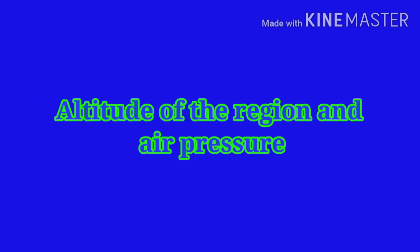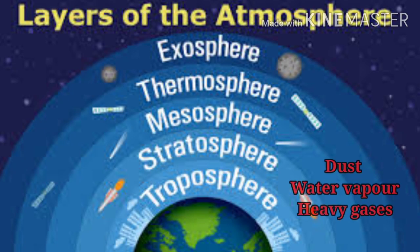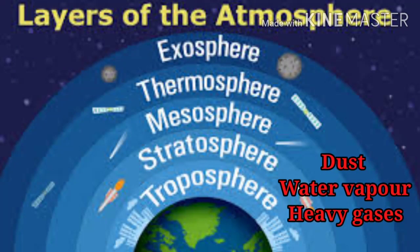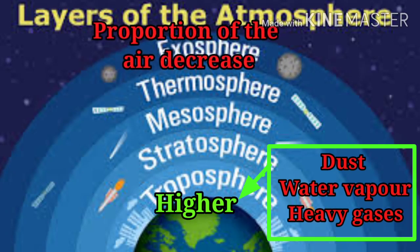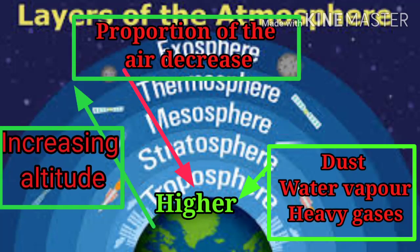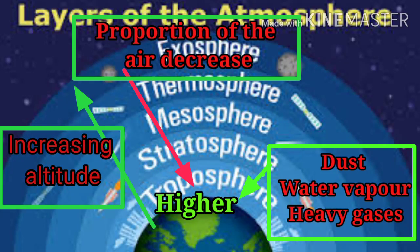Altitude of the region and air pressure: The proportion of dust, water vapor, heavy gases, etc. is higher in the air closer to the surface of the earth. This proportion decreases with increasing altitude. As one moves higher and higher from the surface of the earth, the air becomes thinner and thinner. As a result, the air pressure decreases with increasing altitude.